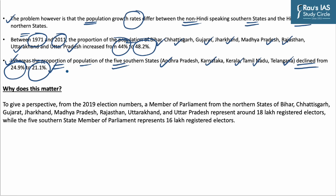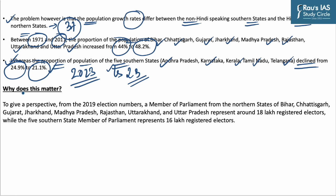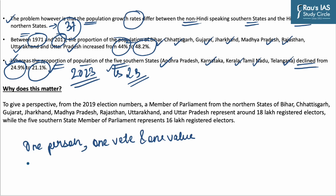If equal size of Lok Sabha constituencies by population is enforced today based on 2023 population projections, the five southern states will lose 23 seats while the northern states will gain 37 seats. The attempt to equalize constituency size by population is based on the principle of one person, one vote, one value.